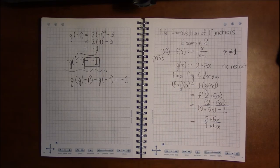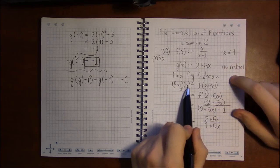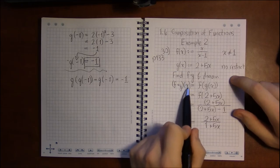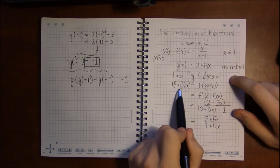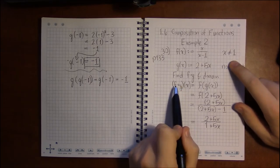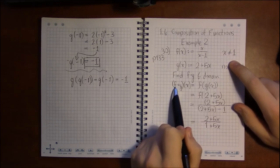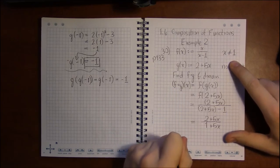So if we look at the domain, there was nothing wrong with, we could plug anything, any x value we wanted to into g and nothing would go wrong. But we can't plug 1 into f, so we don't want...